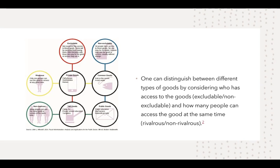Then we have excludable goods — not everyone has access. Cell phones, cars, and homes are examples; you have to purchase them. These are also considered rival goods, where only one person can use the good or service at any given time. Then you have toll goods — things you're also paying for, like private schools, turnpikes, and cable TV. The 91 express lanes are an example — not everyone uses them. These are considered non-rival goods because many people can use them at the same time.